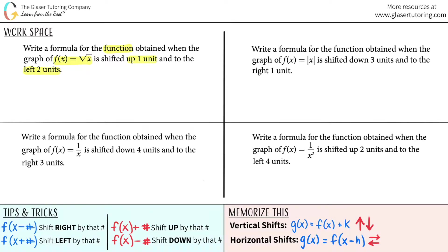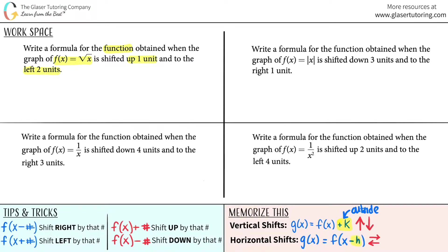For vertical shifts, you're always going to be adding a constant — they call it k — to the outside of the function. Versus if you're doing a horizontal shift, you're always going to be working inside the function. You add the h value inside.